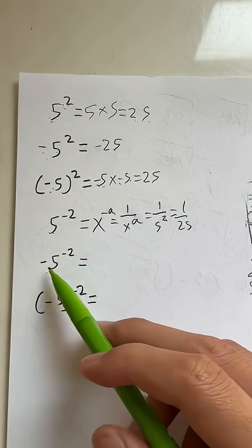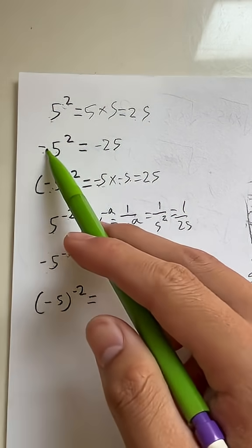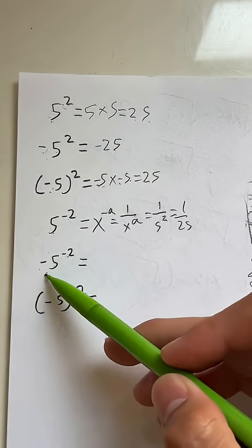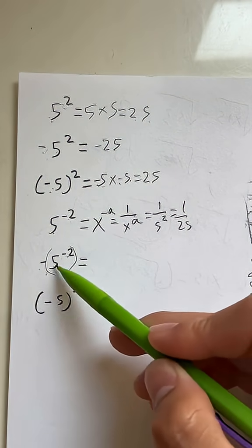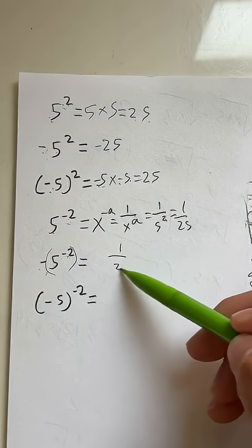Now, what if it's negative 5 to the negative second? As established before, when the negative is not inside parentheses, we have to do this first. 5 to the negative second, we just figured out is 1 over 25.